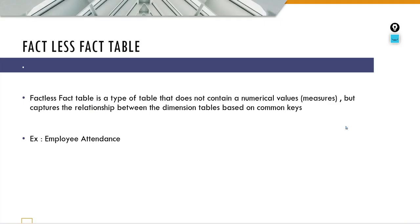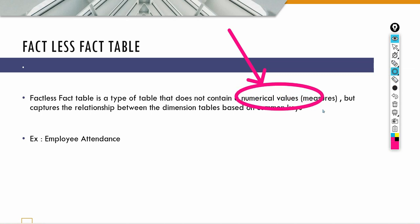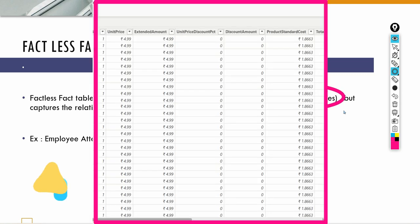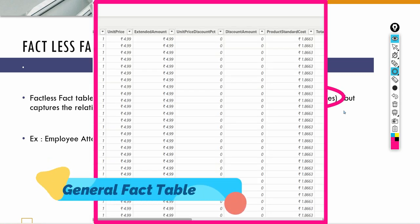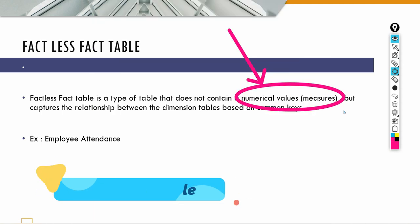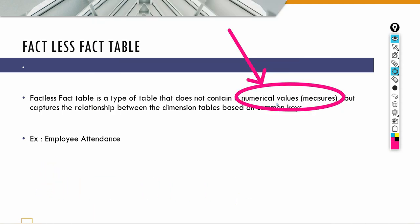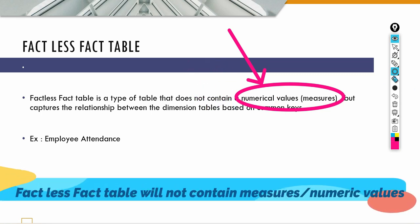So first, let's look at the definition and the figure. A factless fact table is a type of table that does not contain numerical values — this point is very important. A general fact table has measures like sales amount, profit amount, or average amount, but a factless fact table will not contain any numerical values. This is the most important point you have to understand.